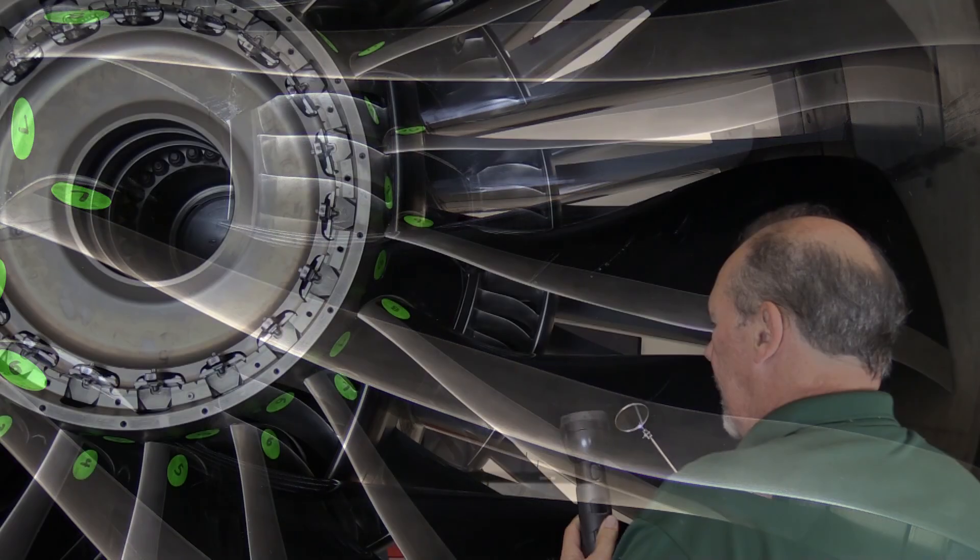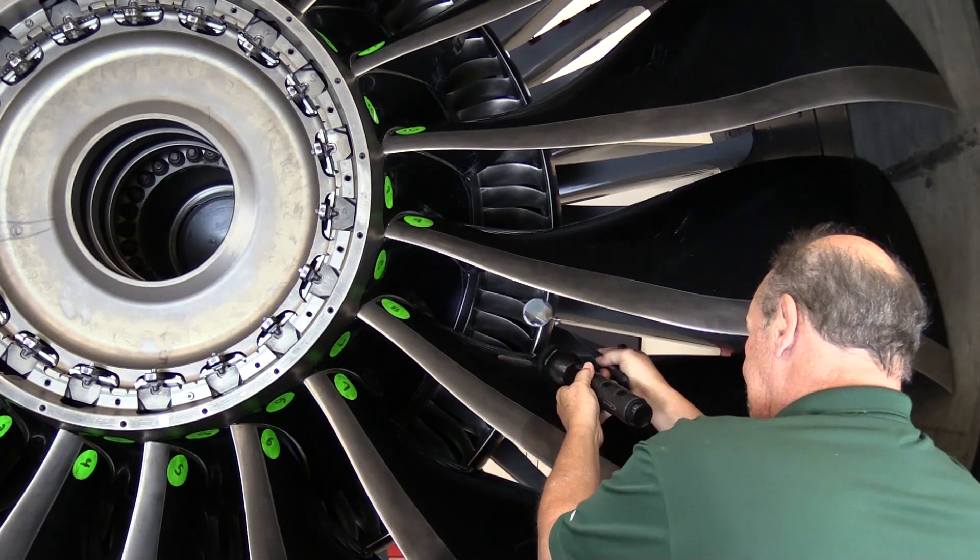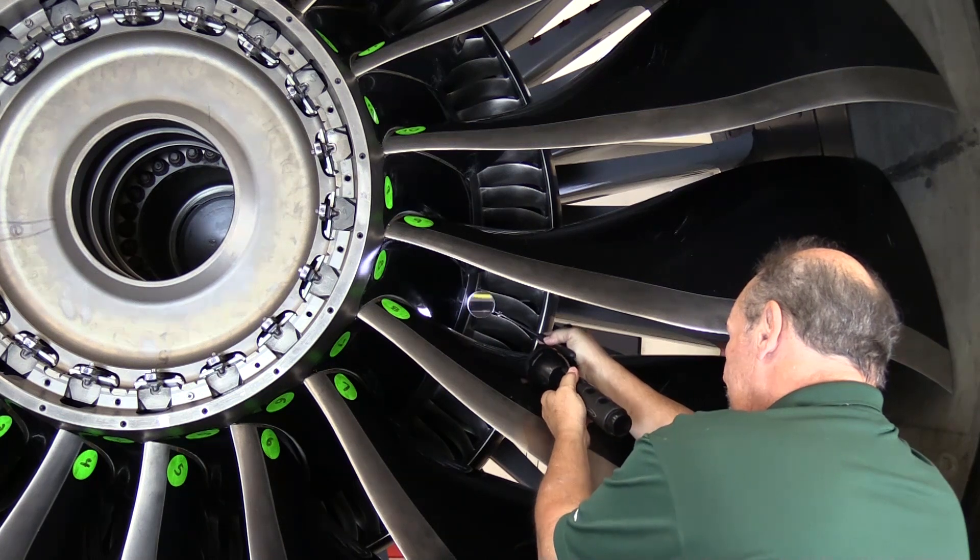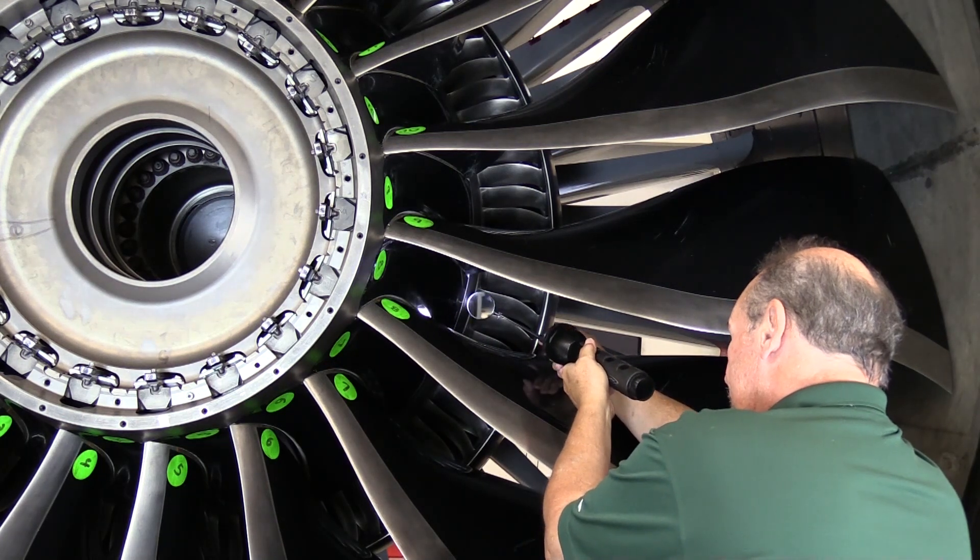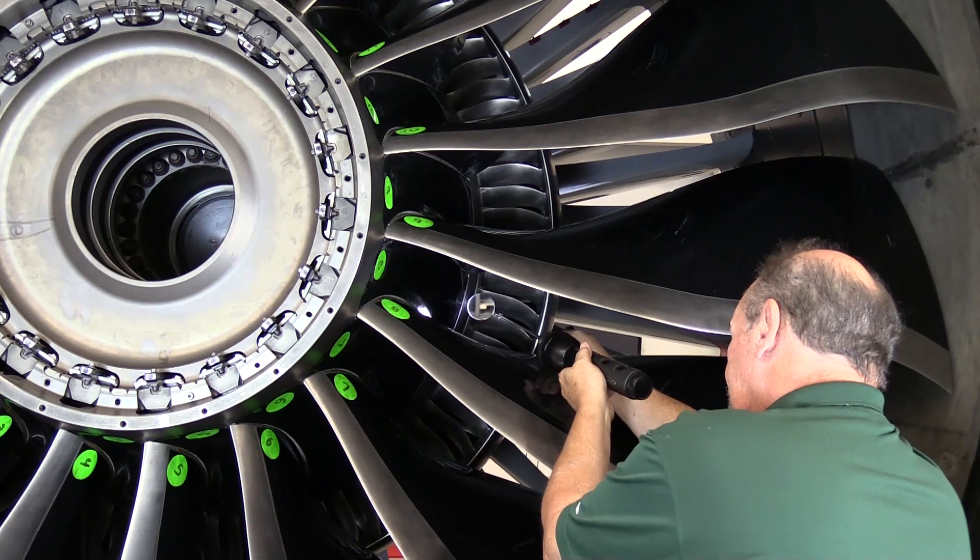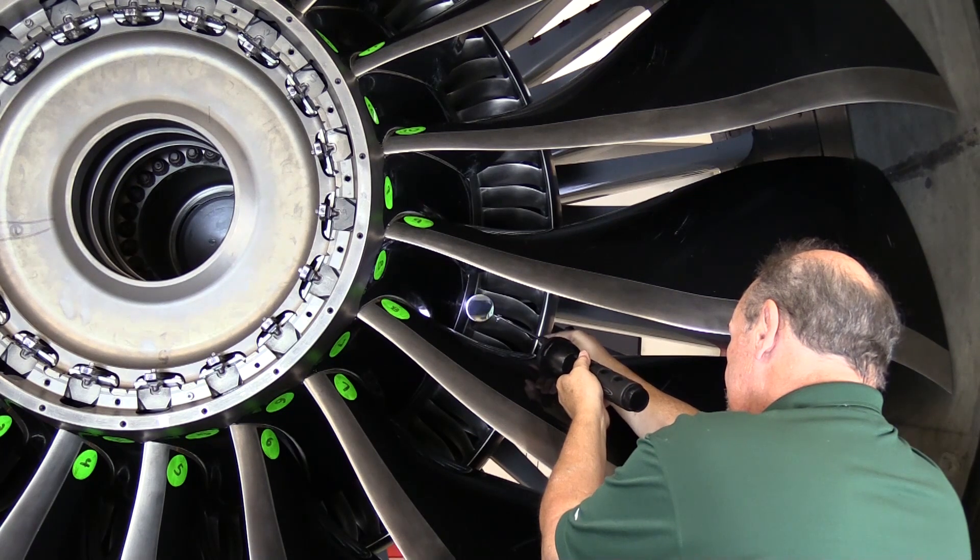From the side using a flashlight and mirror, you can inspect to make sure that the aft end of the platform is correctly installed underneath the flow spacer.